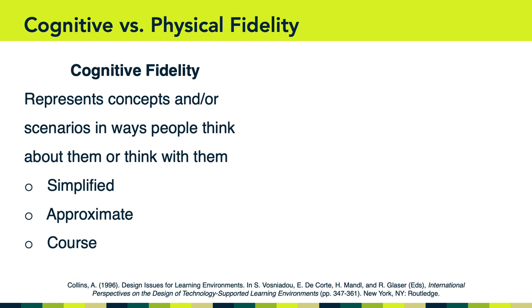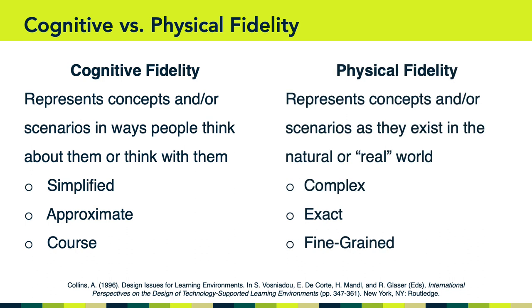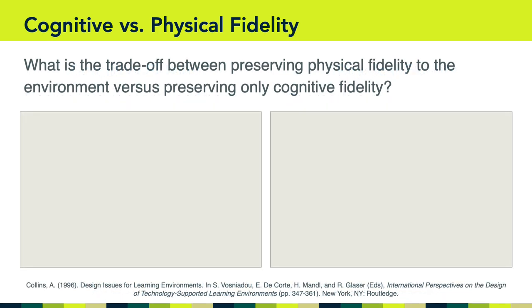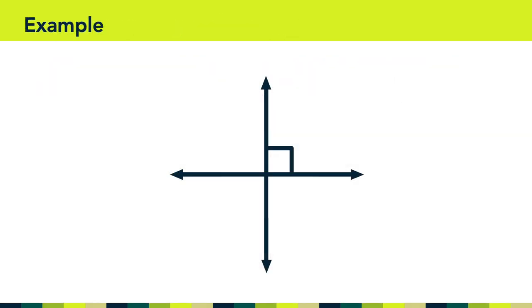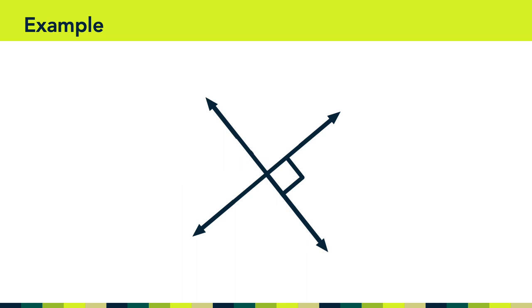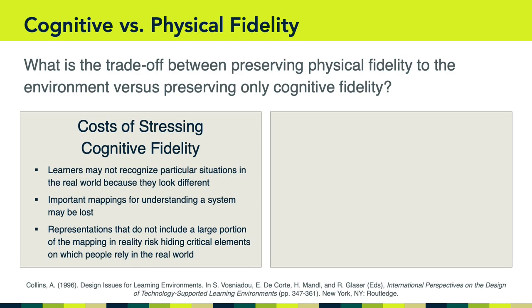Cognitive fidelity has to do with trying to represent situations or concepts in ways that are true to how people think about them or how people think with them. In contrast, physical fidelity is more concerned with representing situations or concepts in ways that are true to their existence in the natural or real world. A cost associated with stressing cognitive fidelity is that learners may not recognize particular situations in the real world because they look different. A classic example is the right angle symbol in mathematics — many students are so used to seeing it in one orientation that when the graphic is rotated, they don't know it's still a right angle.